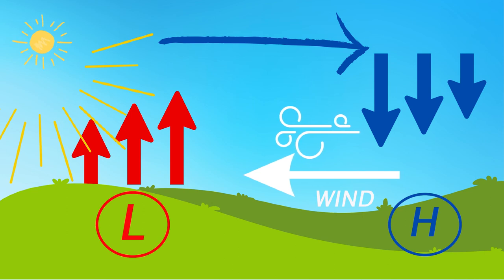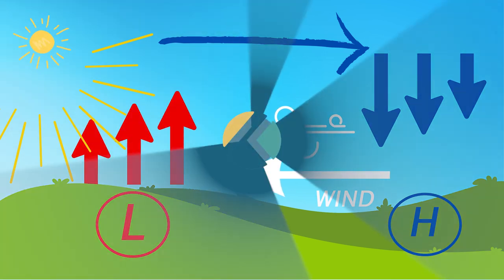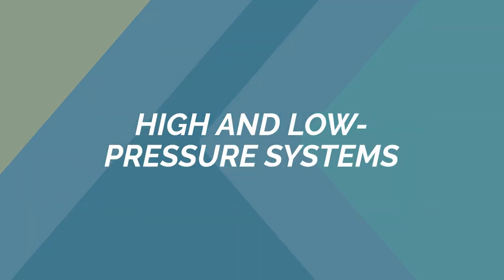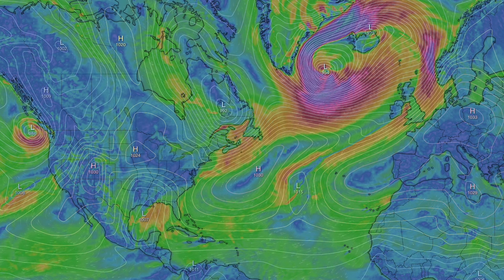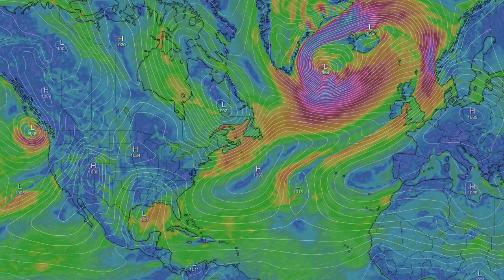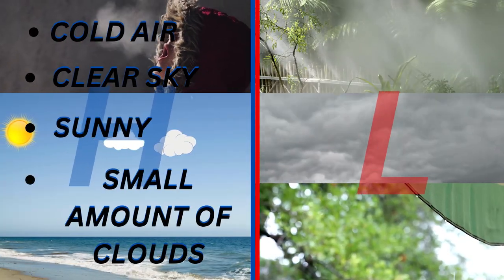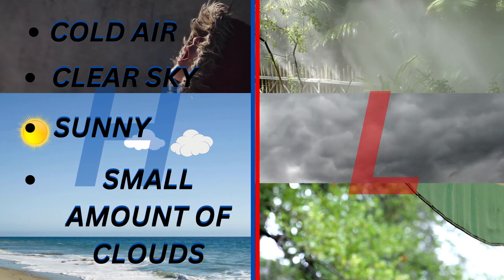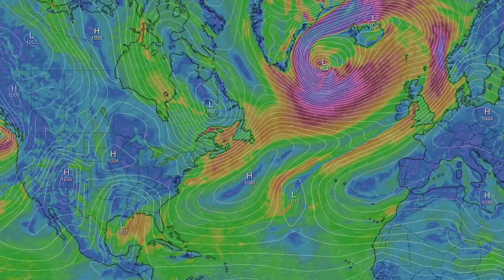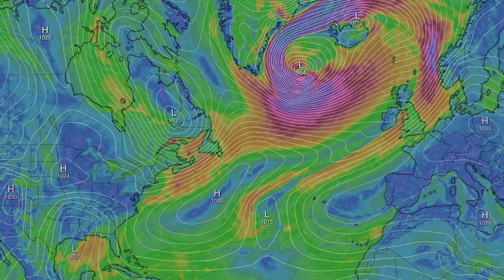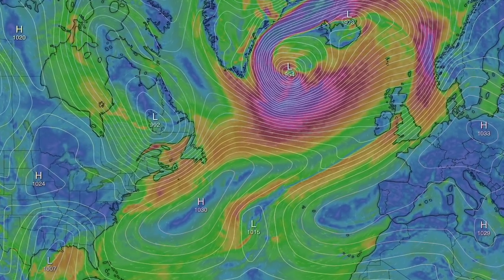Wind always blows from high to low pressure. When you are watching the wind satellite, you can see that high and low pressure areas are surrounded with lines called isobars, which indicate identical pressure. The closer the isobars are to one another, the stronger the wind.